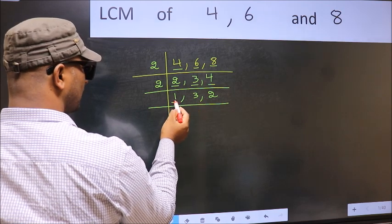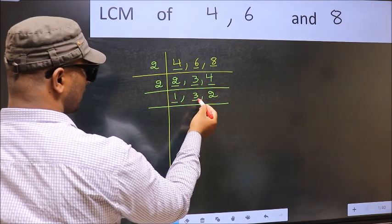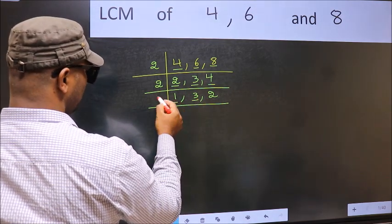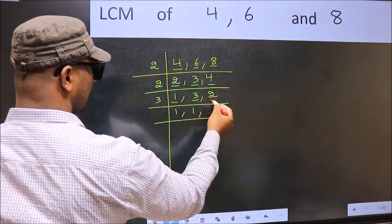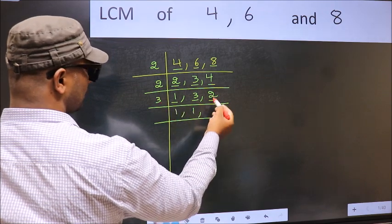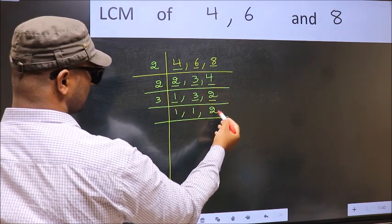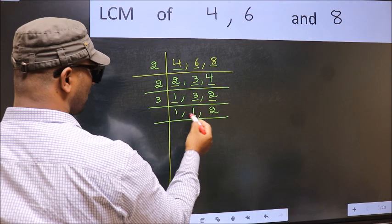Now we got 1 here. So focus on the other number 3. 3 is a prime number. So 3 1s, 3. The other number 2 not divisible by 3. So you write it down as it is.